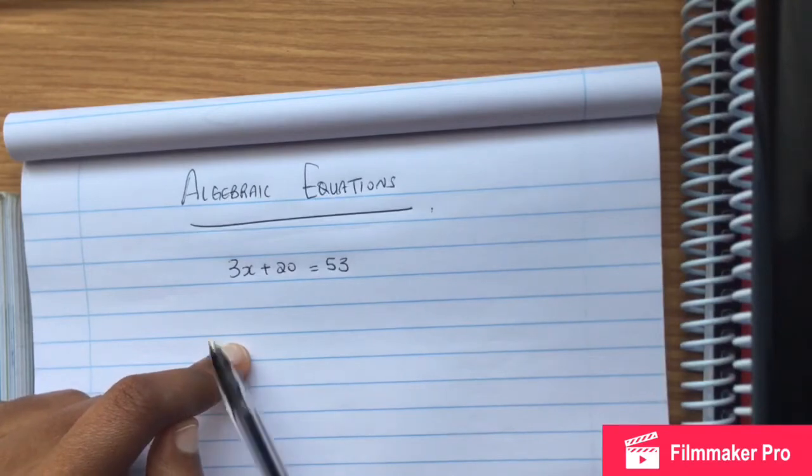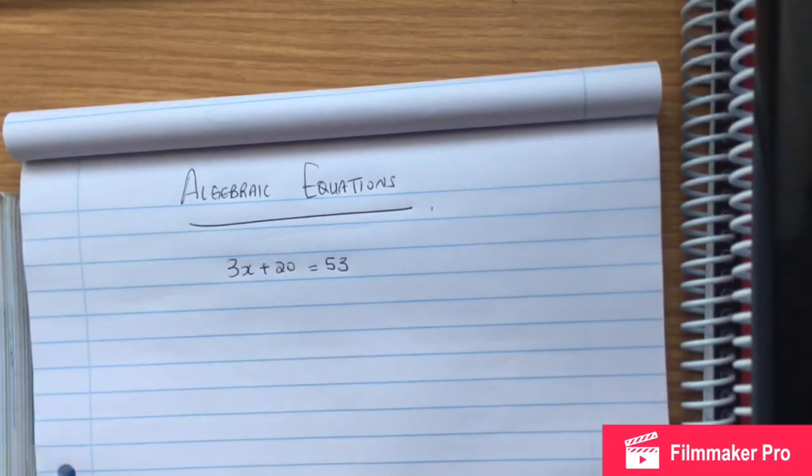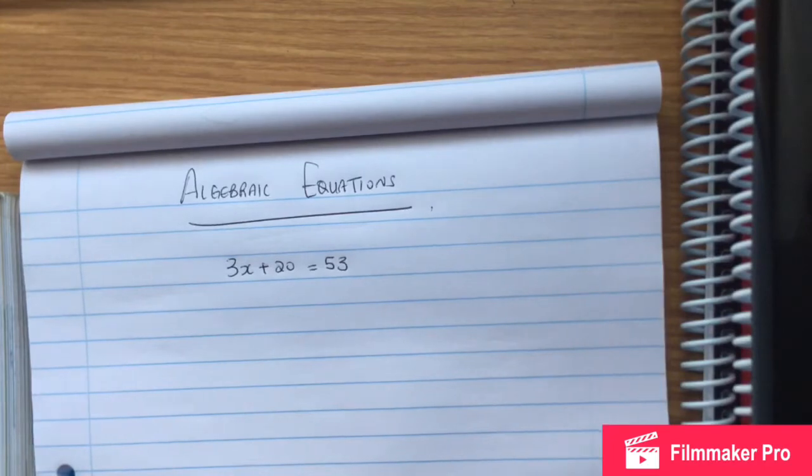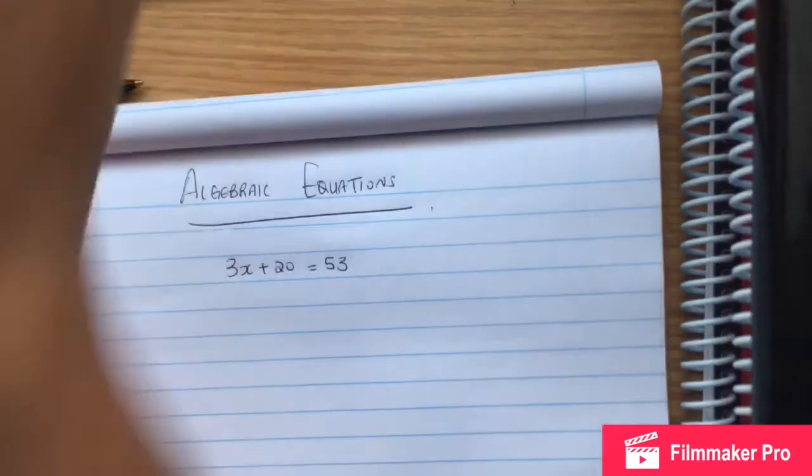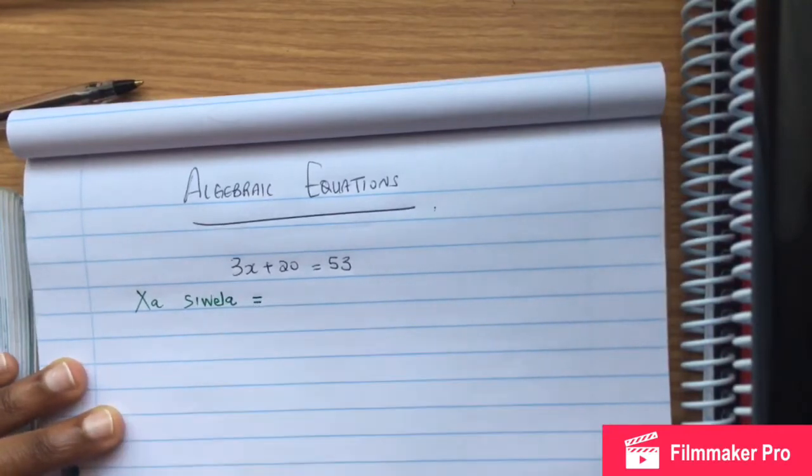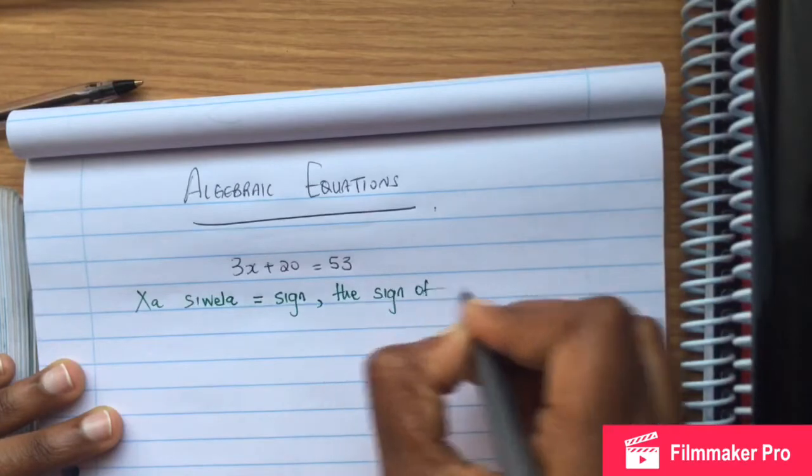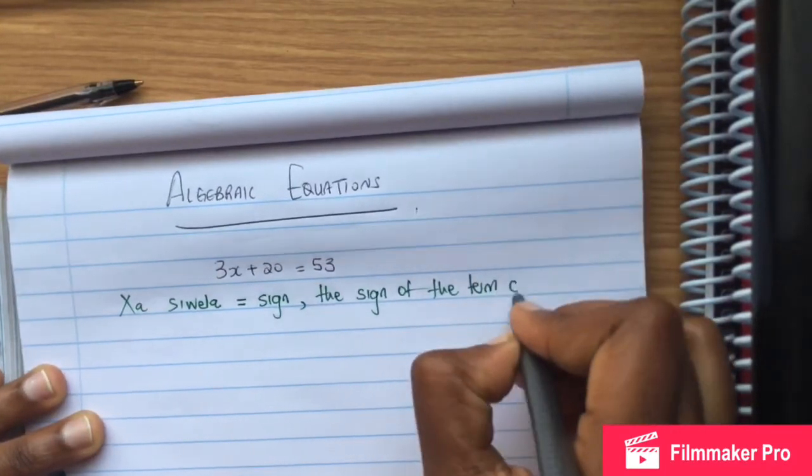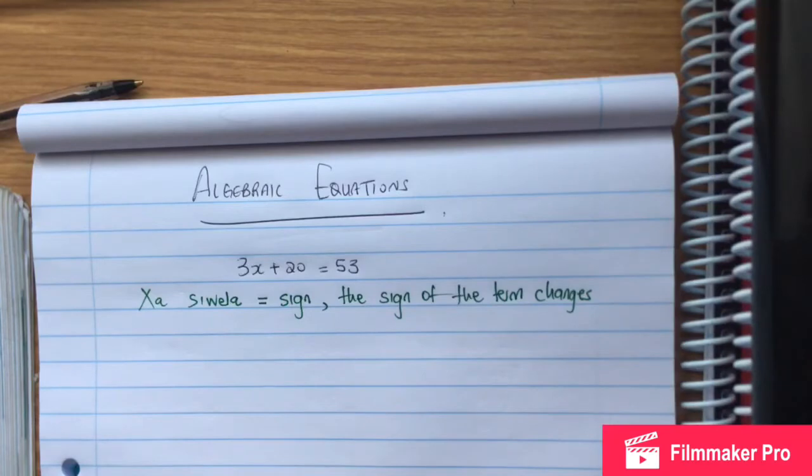We need to always remember when you cross the equal sign, we change the sign. The sign of the term changes. If the term is positive and crosses the equal sign, it becomes negative. If the term is negative, when it crosses the equal sign it becomes positive.